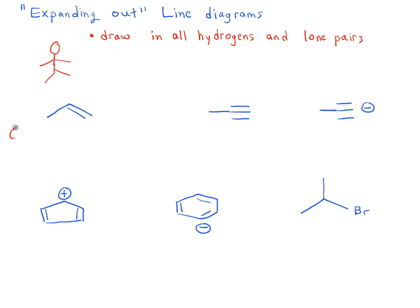Let's look at this first example. This line diagram is of propene. Each carbon here follows the octet rule and is neutral, which means that each carbon has four bonds to it. We haven't drawn in the carbons, but there are carbons here, here, and here. We haven't drawn in the hydrogens either.